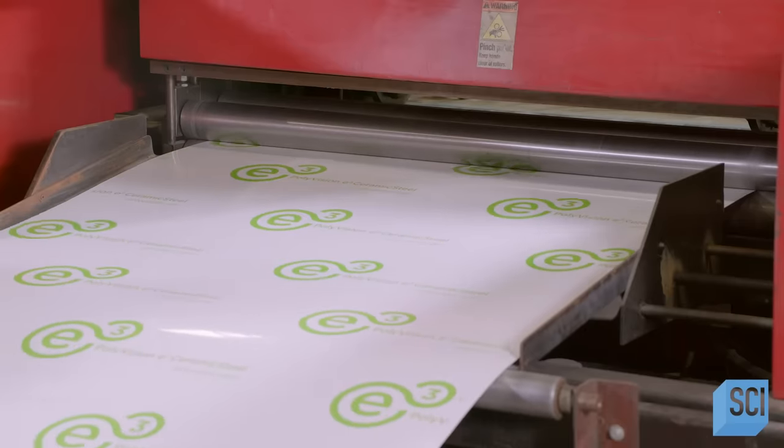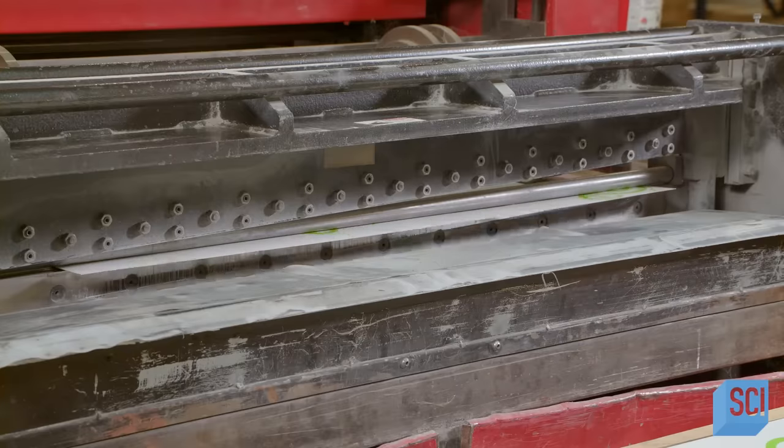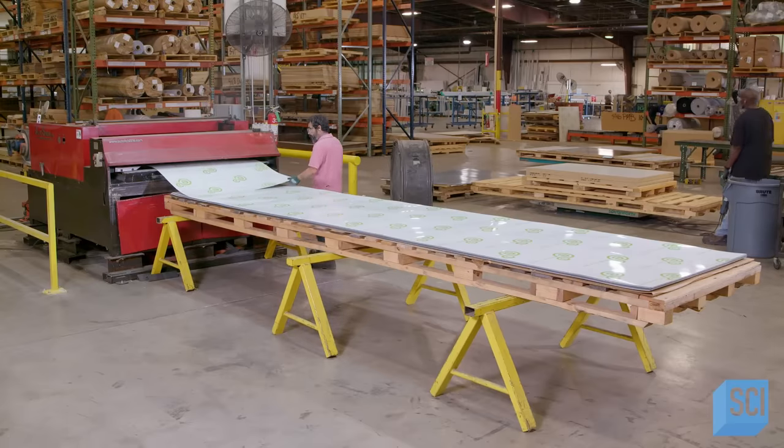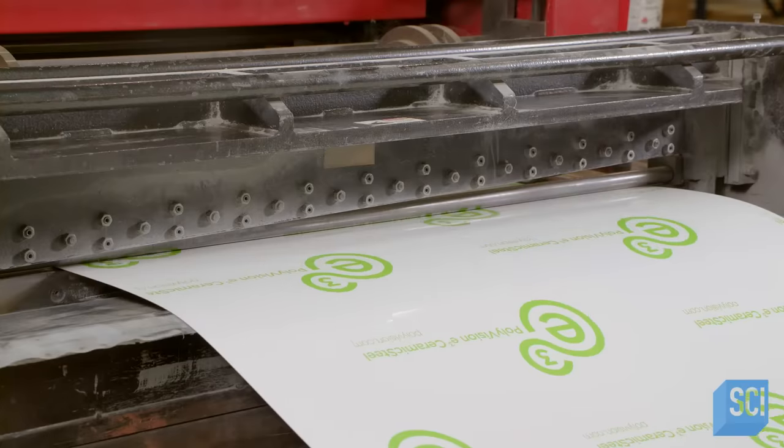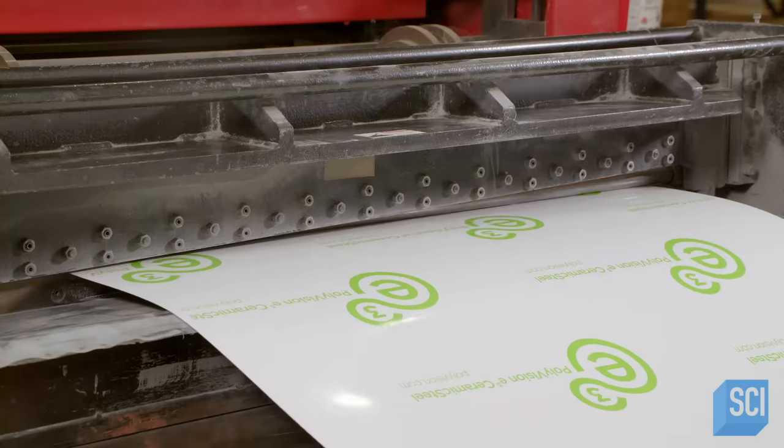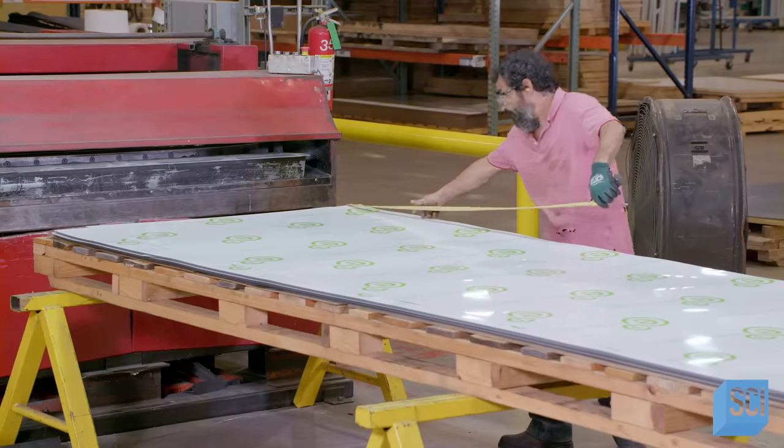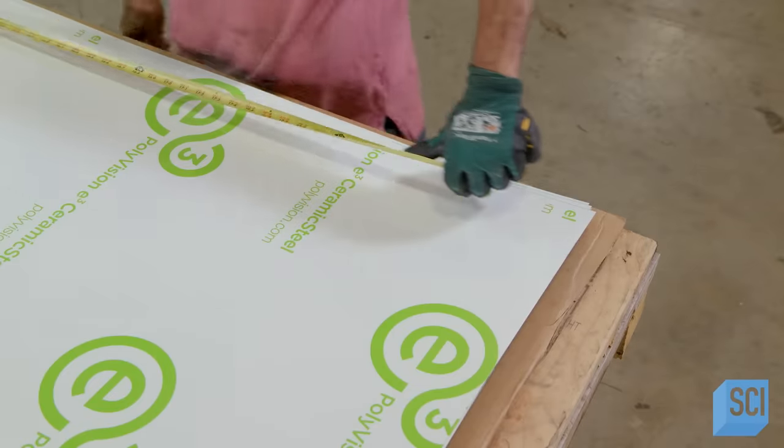To start, the roll is mounted on a cutting machine. A technician programs the machine to cut the roll to a specific length based on the board's dimensions. Workers verify the length and check that the piece is square.